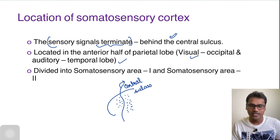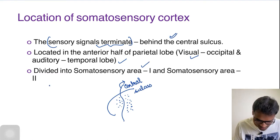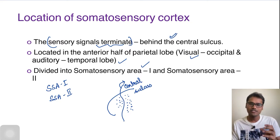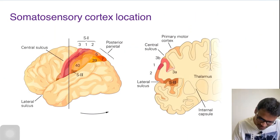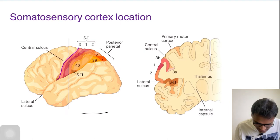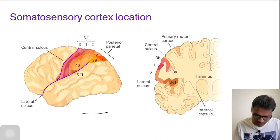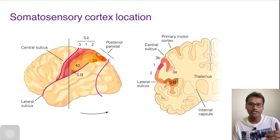The somatosensory cortex is classically divided into somatosensory area 1 and somatosensory area 2. Other than this, we have something called the somatosensory association area. In the diagram you can see one big sulcus called the central sulcus, another classical sulcus is the lateral sulcus, and one more is the parieto-occipital sulcus. These are the three major sulci dividing the brain into four lobes.